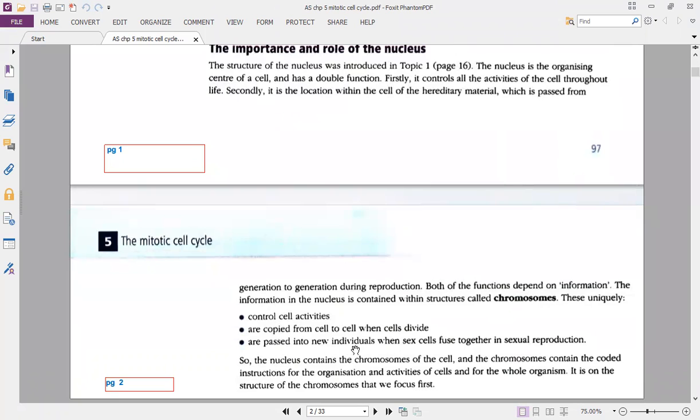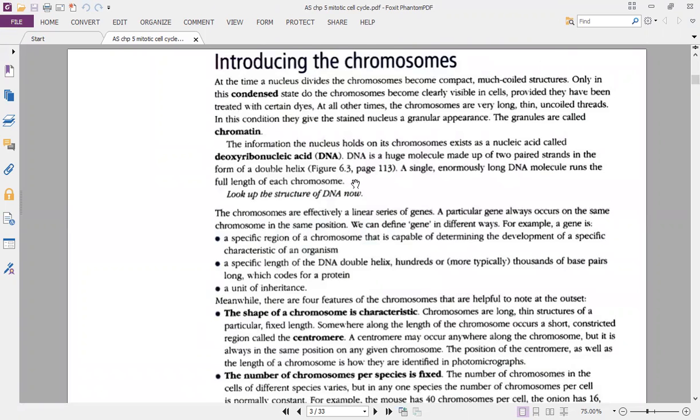And in sex cells, when sex cells are produced, half of the chromosomes are gone there. So the gametes can fuse together to form another cell, the zygote, which will have the same number of chromosomes. So the number of chromosomes, the concept of chromosome must be introduced first.